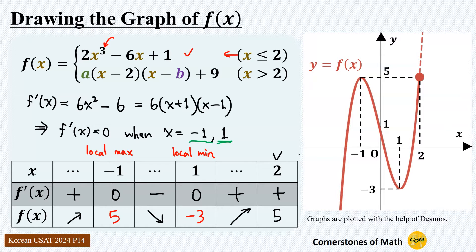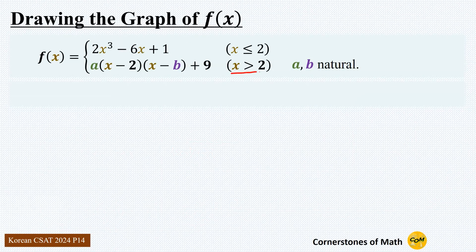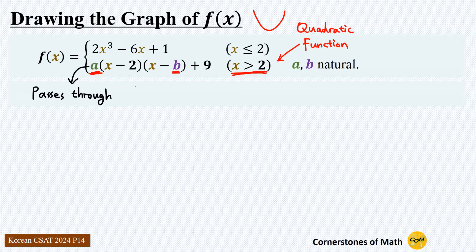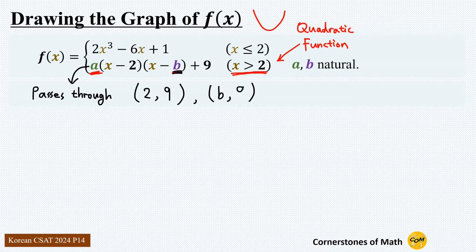Nothing too crazy going on here, just a regular-looking cubic function. Now let's move on to the more interesting part of the graph — the part where x is greater than 2, with natural numbers a and b. This is a quadratic function with positive leading coefficient a, so we know the graph is a convex parabola. We can find some easily identifiable points that this parabola passes through. For example, consider x equals 2: the y-coordinate must be 9. And when x equals b, the y-coordinate also becomes 9. So this is the parabola passing through points (2, 9) and (b, 9).